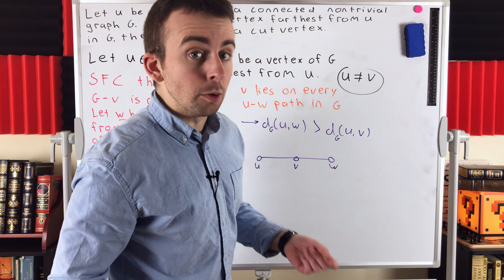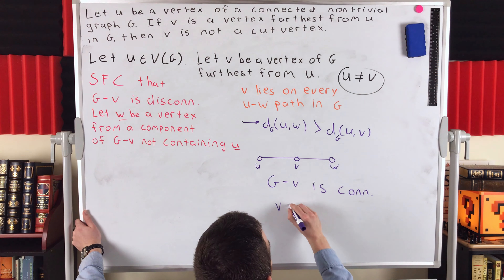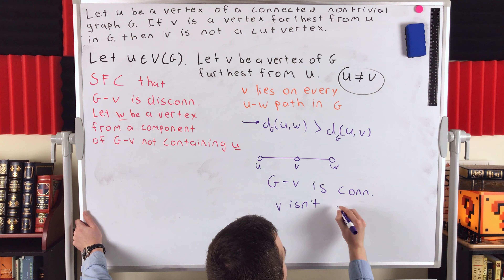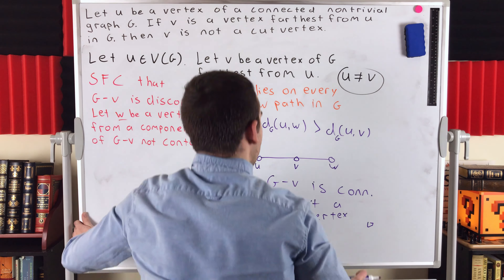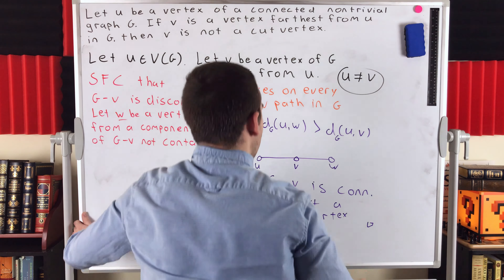And thus, since that's a contradiction — it contradicts our assumption that v is a vertex furthest from u — we know that g minus v must be connected, because our original contradiction assumption was that g minus v is disconnected. By contradiction, we know g minus v is connected, and thus, by definition, v isn't a cut vertex. That completes the proof. U is a vertex of a connected non-trivial graph g; if v is a vertex furthest from u in g, then v is not a cut vertex.